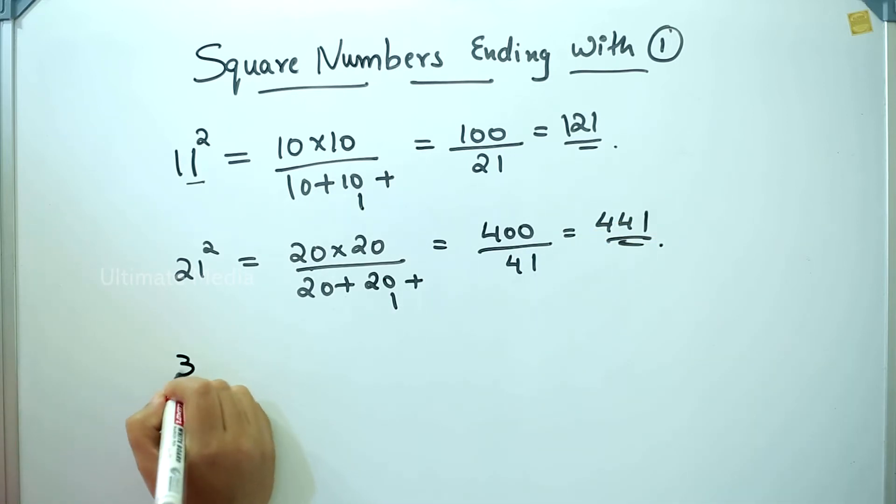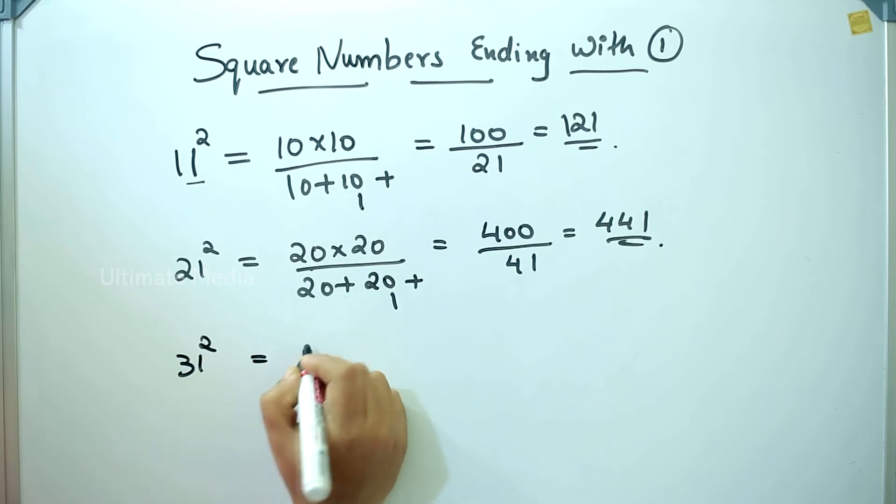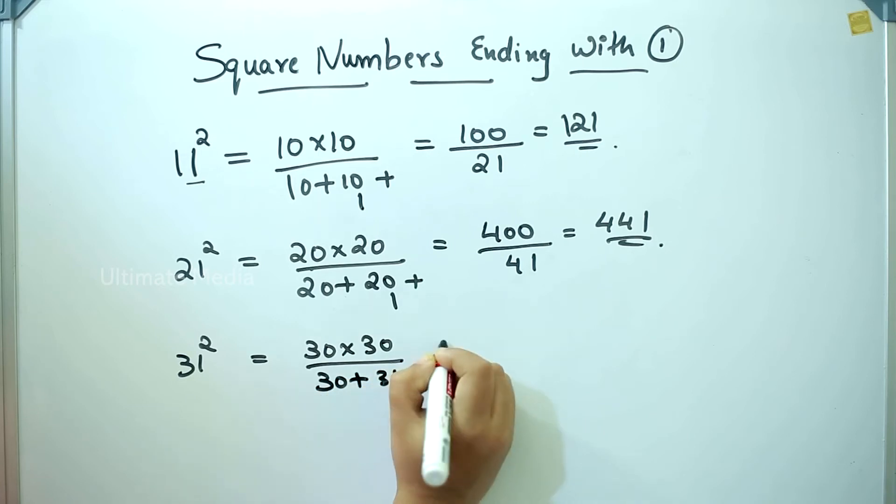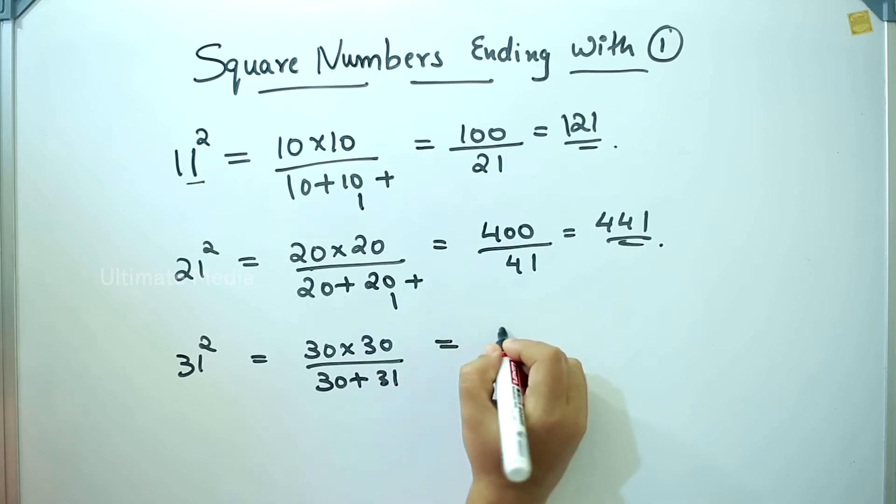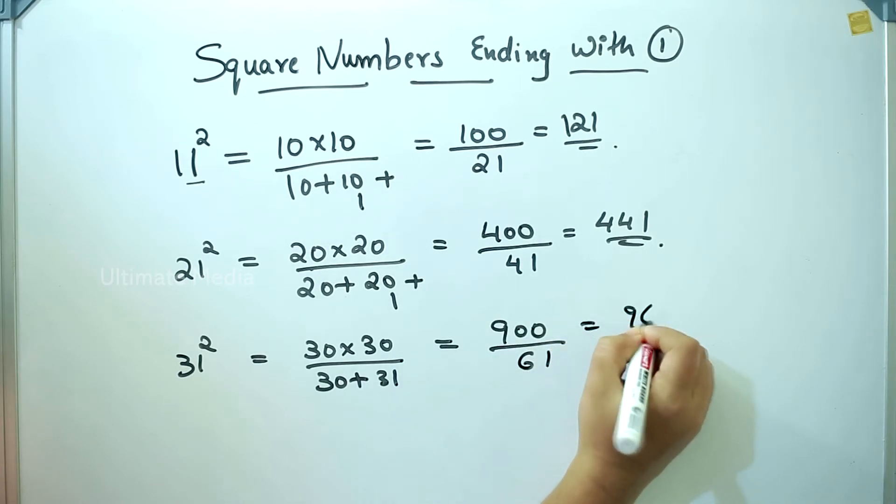Next, 31 square: 30 into 30 divided by 30 plus 31. That is 900 divided by 61, which equals 961.